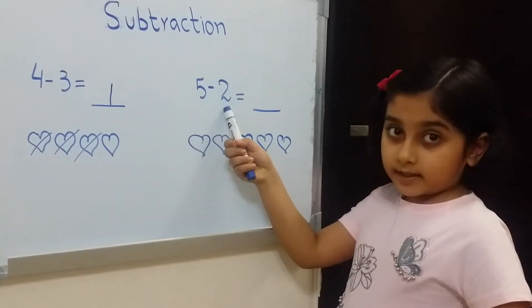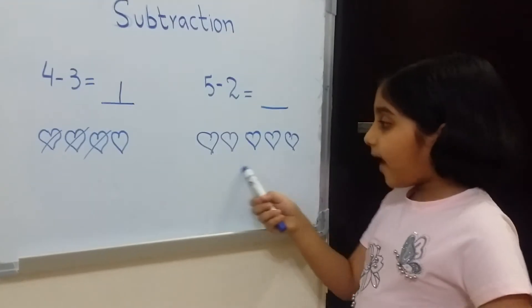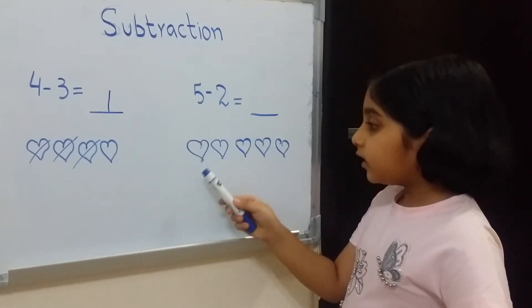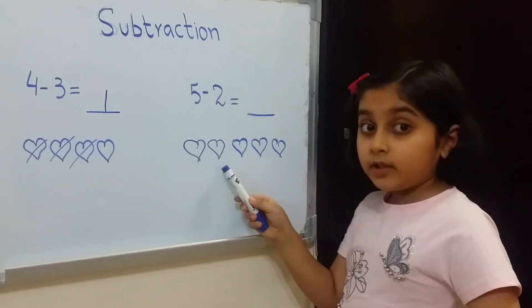5 minus 2. So we have 5 hearts. Now we have 2 here. So that means we will cut 2 hearts.